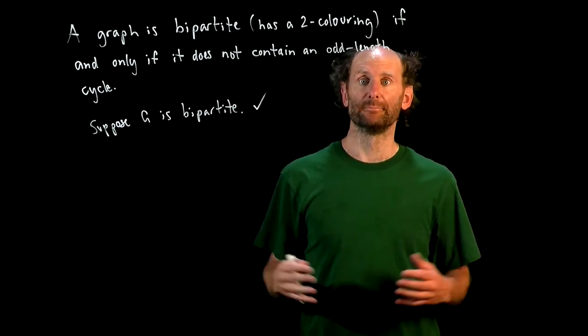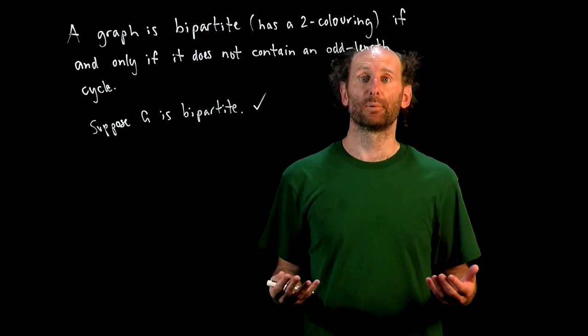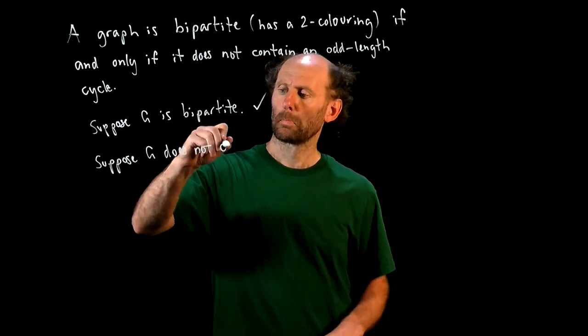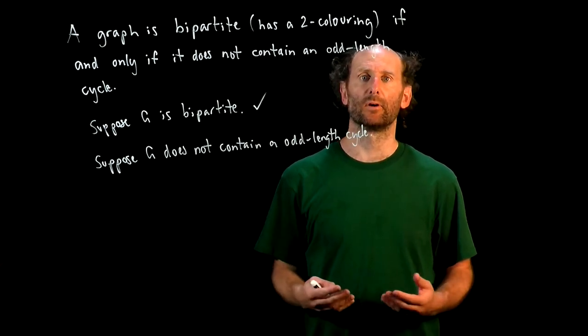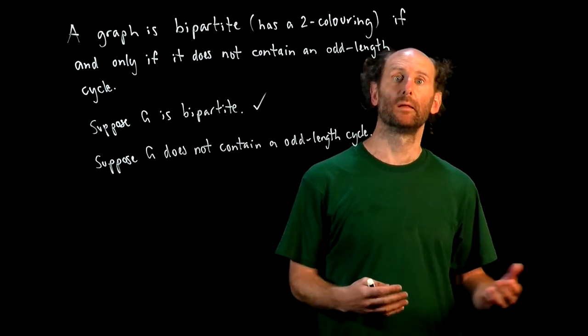So that's pretty easy. Okay, now let's prove the converse. Okay, now we're supposing that our graph G does not contain an odd-length cycle. We want to show then that it's bipartite.